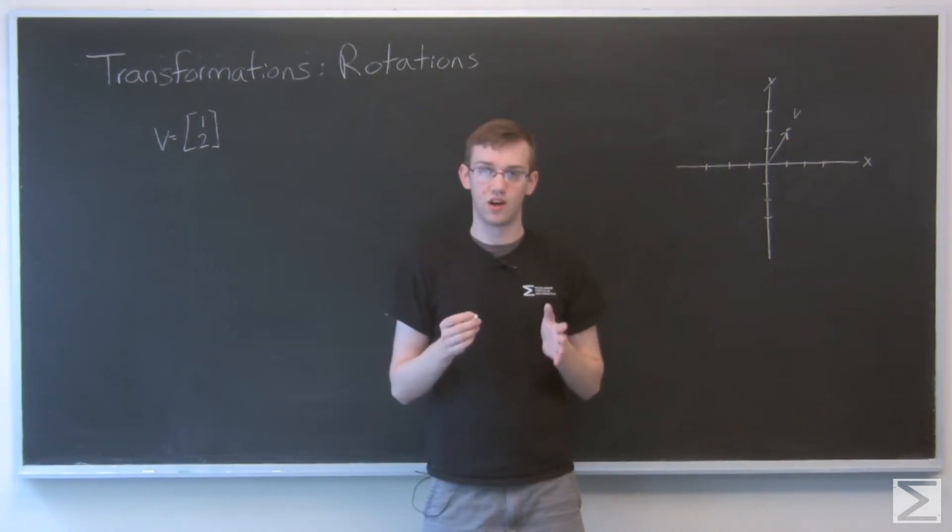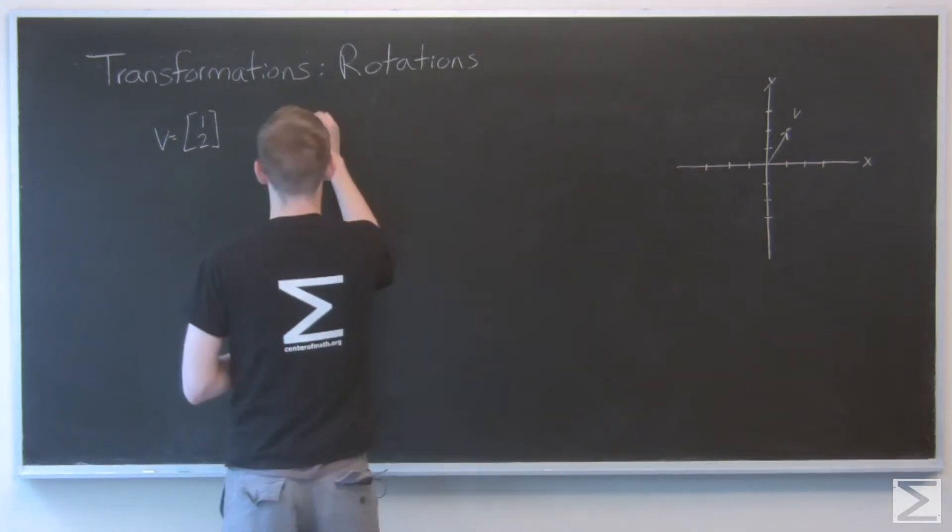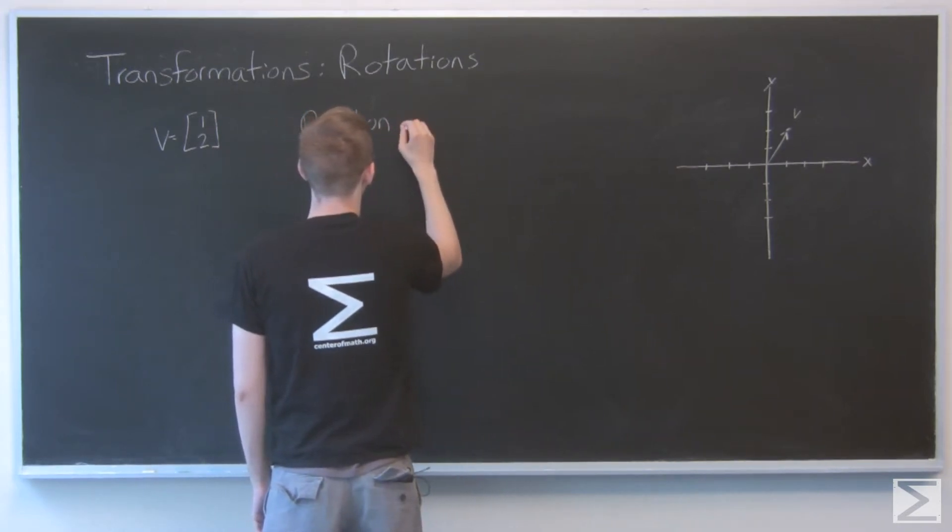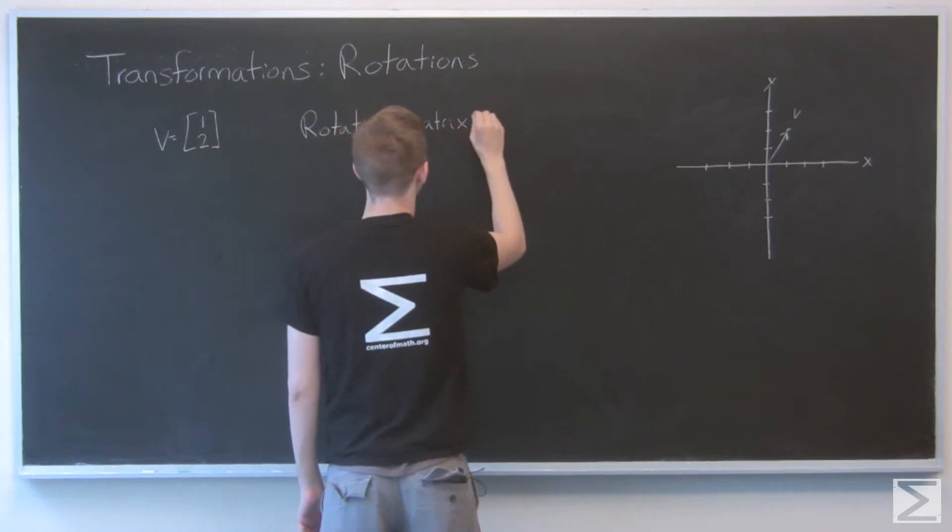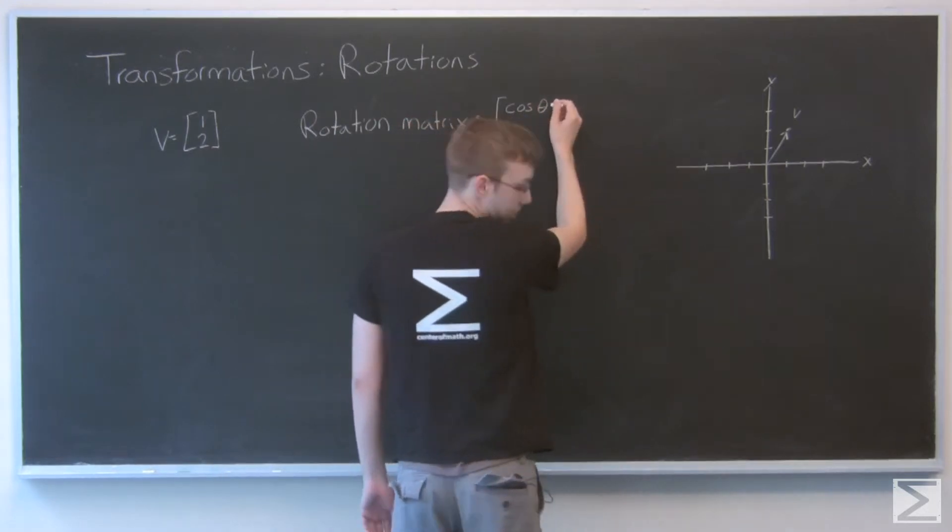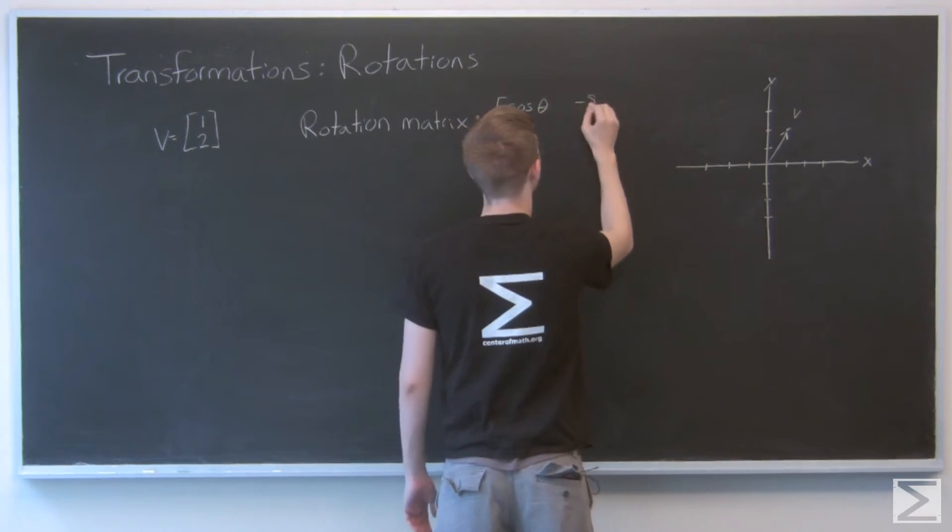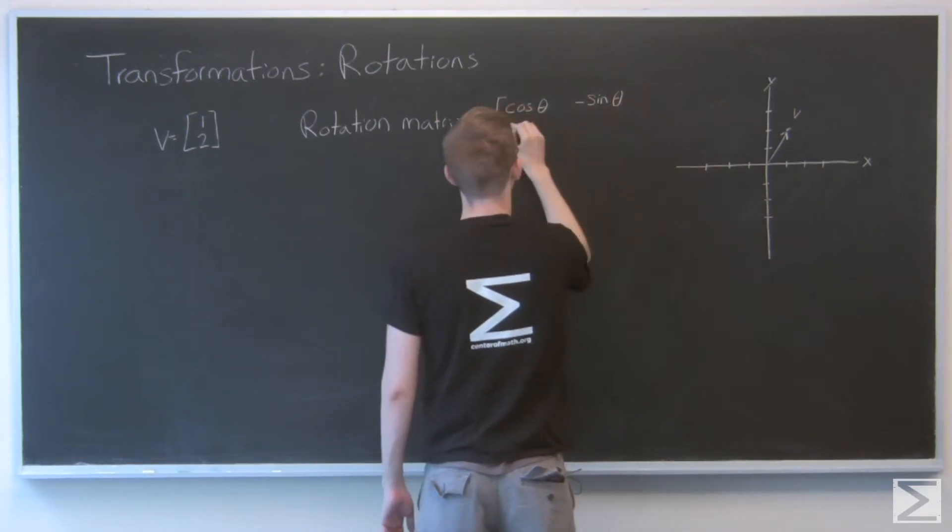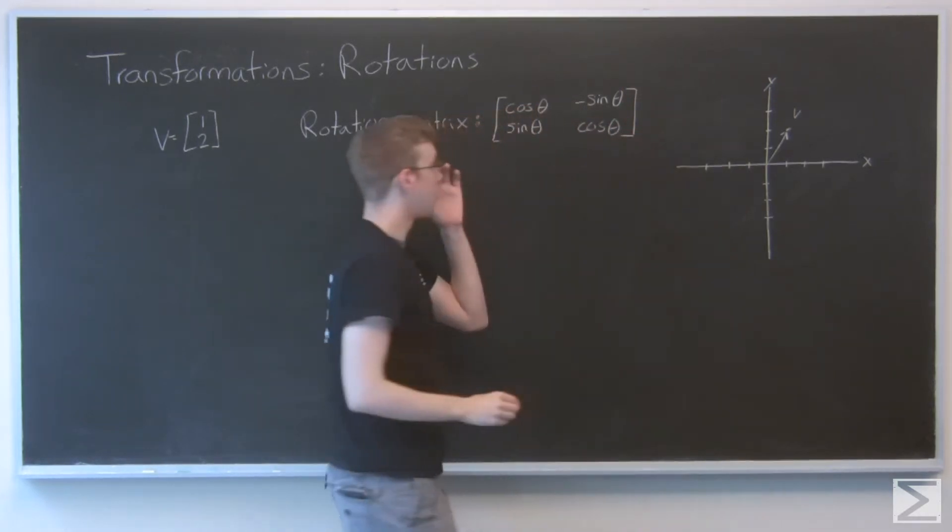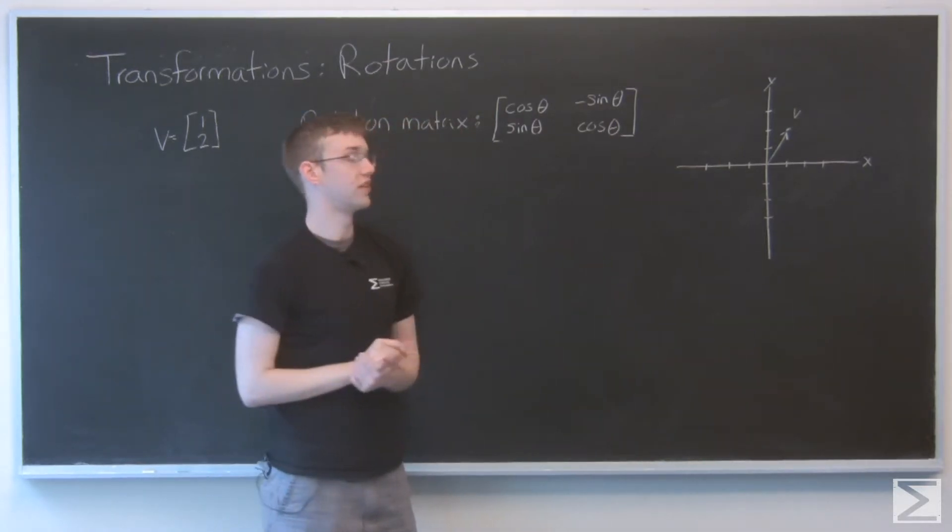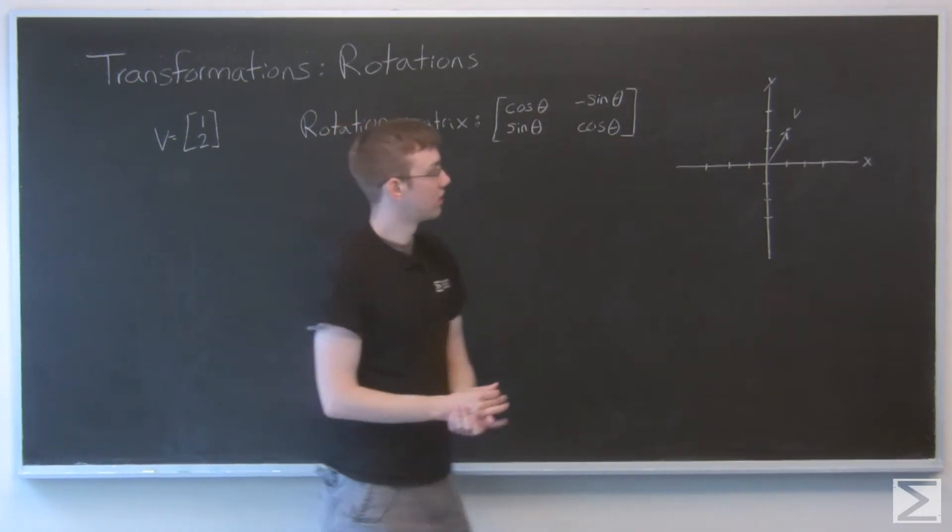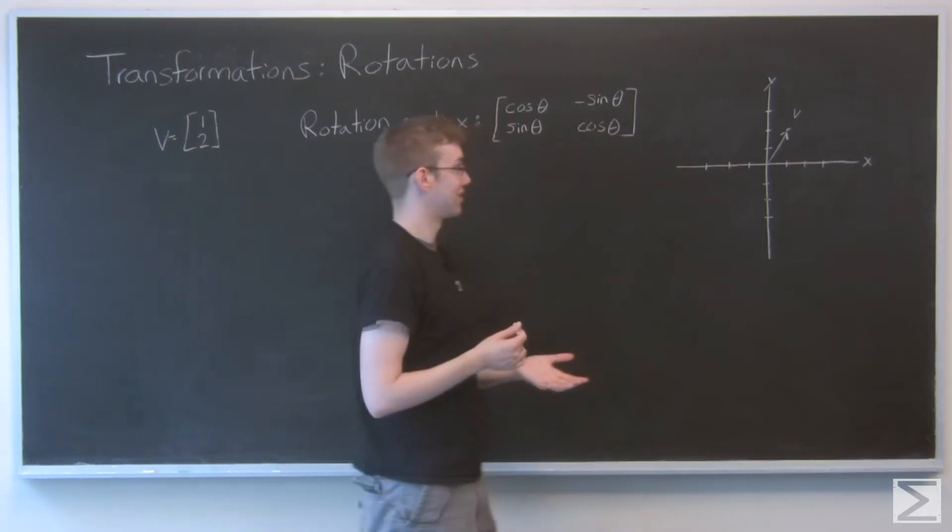So the general rotation matrix looks like this. So cosine theta, negative sine theta, sine theta, cosine theta, where theta is the amount that you want to rotate going counterclockwise.